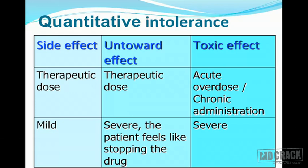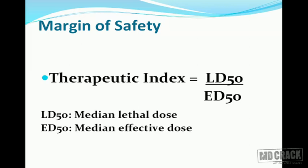Quantitative intolerance involves three different terms. Side effect is mild and produced when the drug is given in therapeutic doses. Untoward effect also happens in therapeutic doses but is quite severe, making the patient feel like stopping the drug. Toxic effects can happen due to acute overdose or chronic administration of a drug, and are quite severe. To decide the margin of safety of the drug, we use the therapeutic index.